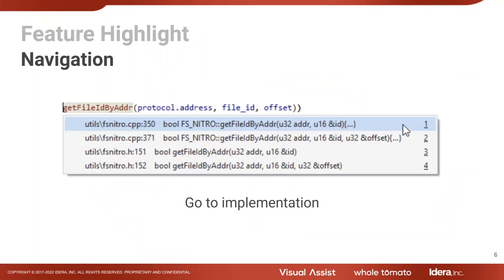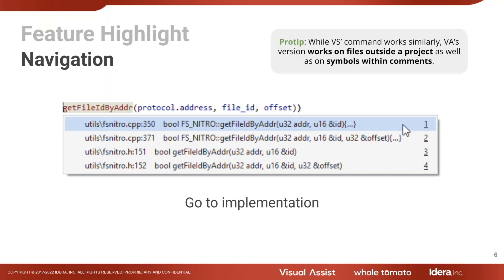Here's an example of a navigation feature: GoToImplementation. It's a nice, simple feature, but ours works differently than the basic Visual Studio one — it tends to show more results, particularly if you have multiple configurations of your project. My favorite version of this is actually GoToRelated, which allows you to go to any related symbol.